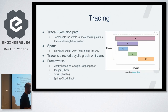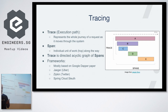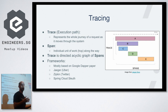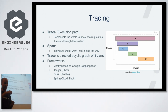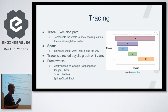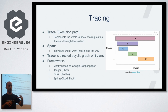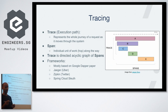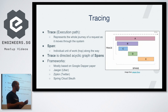The second pillar is tracing. When you receive a request that takes 100 milliseconds, the question is: why did it take that long? If the service calls multiple services to get the final result, tracing allows you to understand the journey of your request within your system. For each hop, a span is created, identified by an ID, with a recorded duration. The collection of spans is called a trace. If one span takes 30ms and another 50ms, the total is 100ms — you can see exactly where the time was spent.